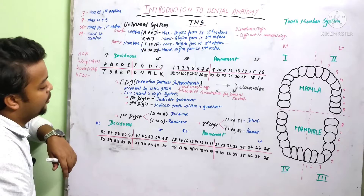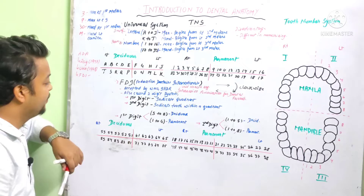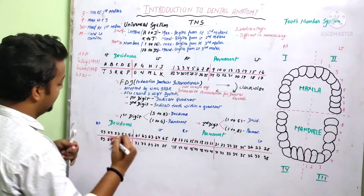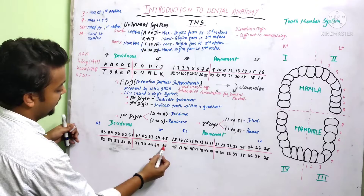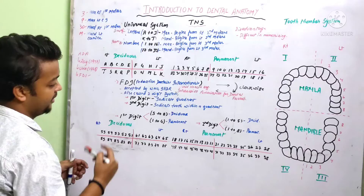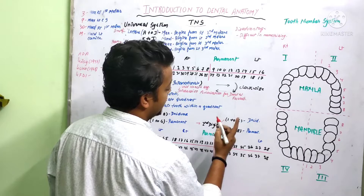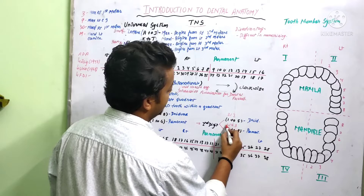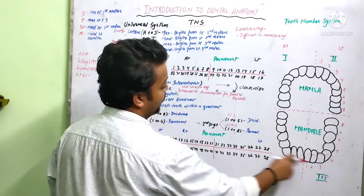The FDI is also called the two-digit system. The first digit indicates the quadrant and the second indicates the tooth within that quadrant. For permanent, quadrants are numbered 1 to 4. For deciduous, quadrants are 5 to 8. In permanent dentition each quadrant has 8 teeth — 2 incisors, 1 canine, 2 premolars, and 3 molars. In FDI, we say 'seven one' or 'seven two', not 'seventy-one' — each digit is spoken separately.